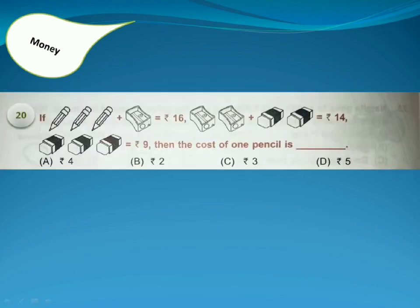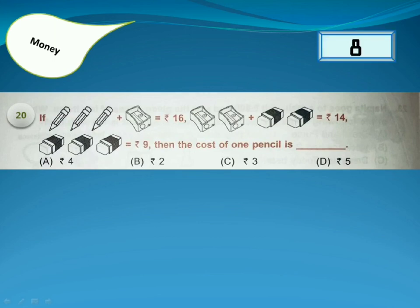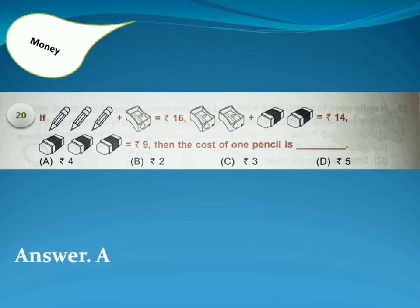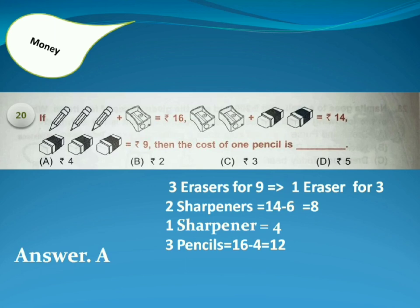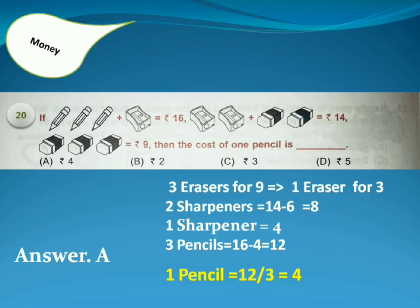If 3 pencils plus 1 sharpener equals 16 rupees, 2 sharpeners plus 2 erasers equals 14 rupees, and 3 erasers equals 9 rupees, then what is the cost of 1 pencil? Answer is Option A. From the 3rd statement, 3 erasers for 9 means 1 eraser for 3. So the 2nd statement becomes 2 sharpeners equals 14 minus 6, which is 8, so 1 sharpener costs 4 rupees. Hence the 1st statement becomes 3 pencils equals 16 minus 4, which is 12, so 1 pencil equals 12 divided by 3, which equals 4.